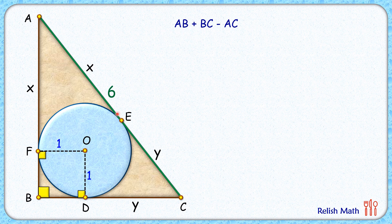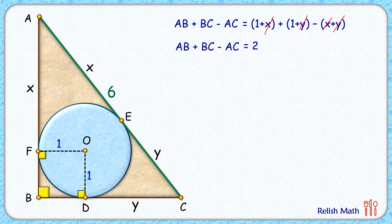BC is 1 plus y, and AC is x plus y. So when we are simplifying it, on the right side x will get cancelled out and y will also get cancelled out, so we'll get AB plus BC minus AC is 2.